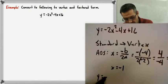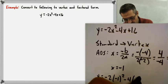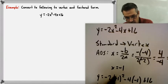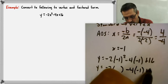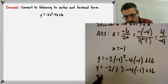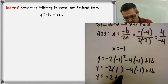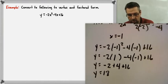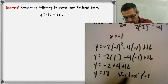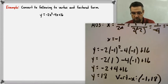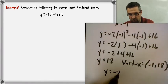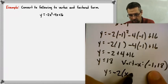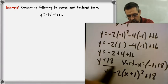To find the vertex, we plug x equals negative 1 back in: y equals negative 2 times (negative 1) squared minus 4 times (negative 1) plus 16. Doing exponents first, negative 1 squared is positive 1. Multiplying: negative 2 times 1 is negative 2; negative 4 times negative 1 is positive 4; plus 16. Combining like terms: y equals 18. So our vertex is (negative 1, 18). We plug into vertex form with a equals negative 2, giving y equals negative 2 times (x plus 1) squared plus 18.